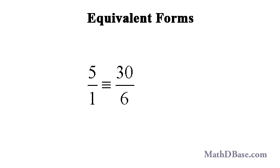As we saw in the equivalent fractions Anticast, we can check that 5 over 1 and 30 over 6 are equivalent by dividing.